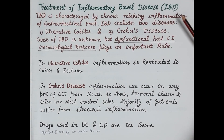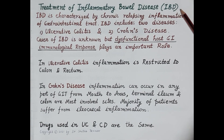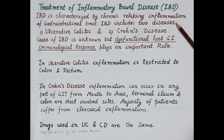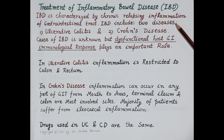Today we are going to discuss the treatment of inflammatory bowel disease. Inflammatory bowel disease is characterized by chronic relapsing inflammation of the gastrointestinal tract — there is inflammation of the wall of the GIT. The wall of the GIT is made up of four main tissue layers: the innermost is the mucosa, then the submucosa, the muscle layer, and the outermost is the serosa. The disease shows relapses, that is flare-up of disease and increase in symptoms, followed by remission, that is improvement in symptoms.